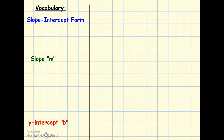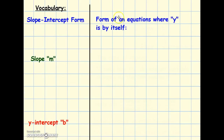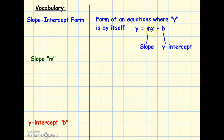Start off with some vocabulary. Go to your vocabulary section under S and write slope-intercept form. Slope-intercept form is the form of an equation where y is by itself, commonly written as y equals mx plus b. You'll notice y is on one side of the equation all by itself. We call this slope-intercept form because the slope and the y-intercept can be easily found. The slope is the number connected to the x, and the y-intercept is the number afterwards, by itself, not with a variable.